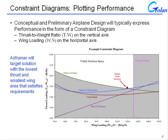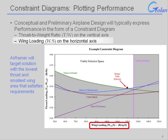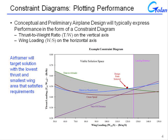Early in the design process, in conceptual and even into preliminary design, we will typically express the performance of the aircraft in the form of a constraint diagram. This is a plot with thrust loading, or thrust-to-weight ratio, on the vertical axis, and wing loading, or weight divided by wing area, on the horizontal axis. Within this plot, we present lines that meet the spec requirement for takeoff distance, landing distance, cruise speed, and so on.